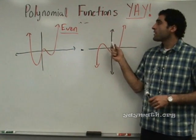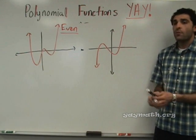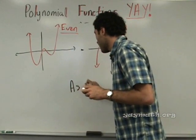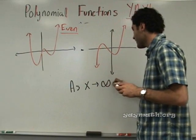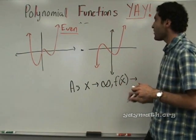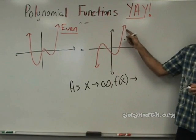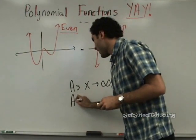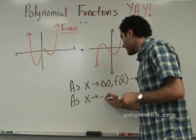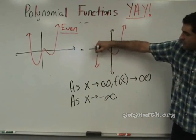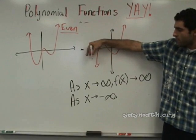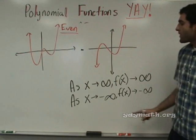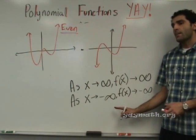Let's do the end behavior of this one together quickly. What's the first part of end behavior? As x approaches infinity, f of x approaches negative infinity. As x approaches negative infinity, f of x approaches negative infinity as well. Here, x is getting smaller and smaller because we're moving to the left.